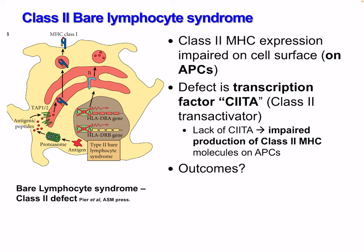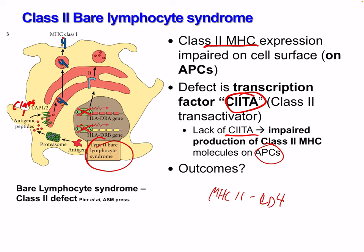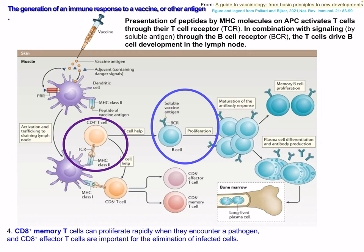Class 2 bare lymphocyte syndrome: class 2 MHC expression is impaired. This results in a defect in the transcription factor CIITA, or class 2 transactivator. Lacking CIITA causes impaired production of class 2 MHC. This is quite severe as we have no MHC class 2, and therefore no CD4 T cells. Remember, CD4 T cells help B cells, regulate innate immunity, and release cytokines, so these all help direct the entire immune system — without them it can be quite disastrous.